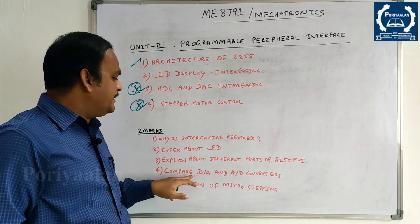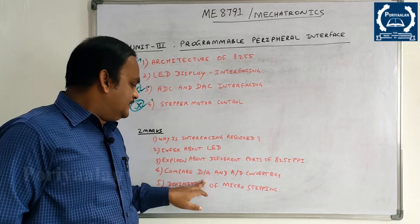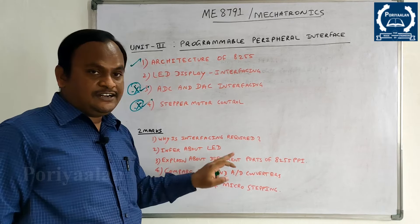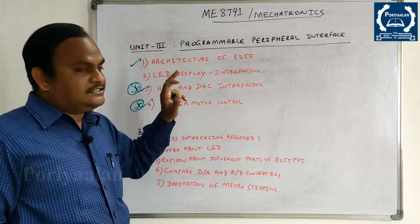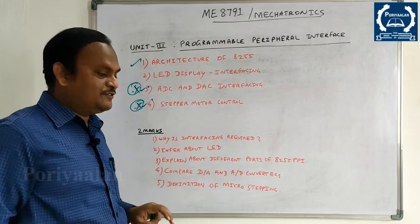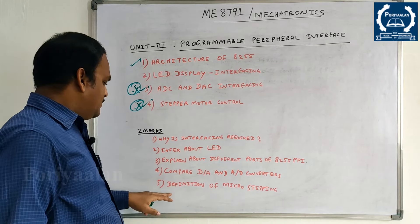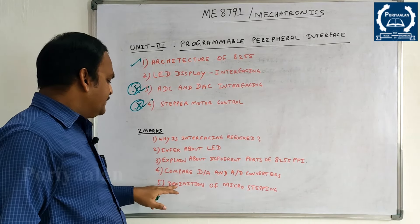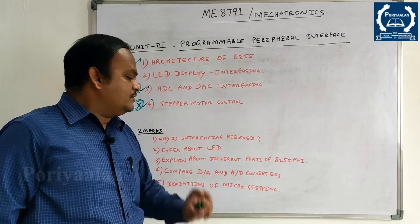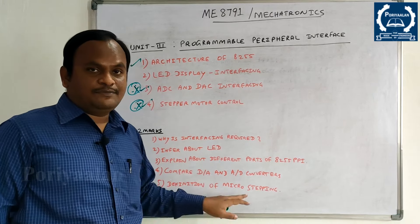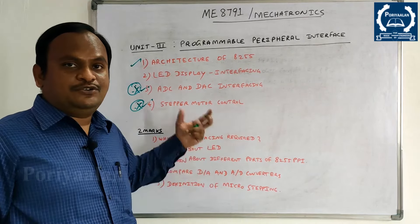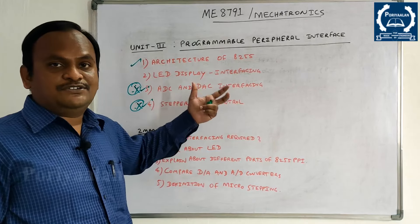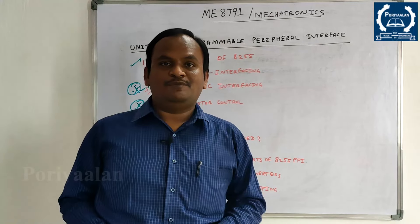8255 is easier — you can use the major points. Compare Analog to Digital and Digital to Analog (ADC DAC). Definition of micro stepping — for 2 marks plus big questions, you can get full marks in Unit 4.